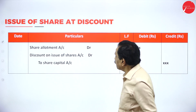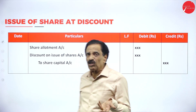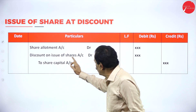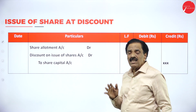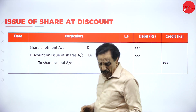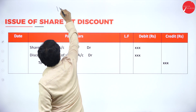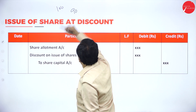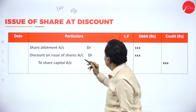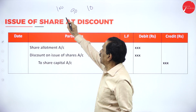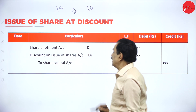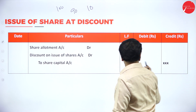For issue of shares at a discount, the entry is: Share Allotment Account Dr. and Discount on Issue of Shares Account Dr. to Share Capital Account. For example, if the share value is Rs. 100 and it is issued at Rs. 90, the entry is: Share Allotment Account Dr. Rs. 90, Discount on Issue of Shares Account Dr. Rs. 10, to Share Capital Account Rs. 100.